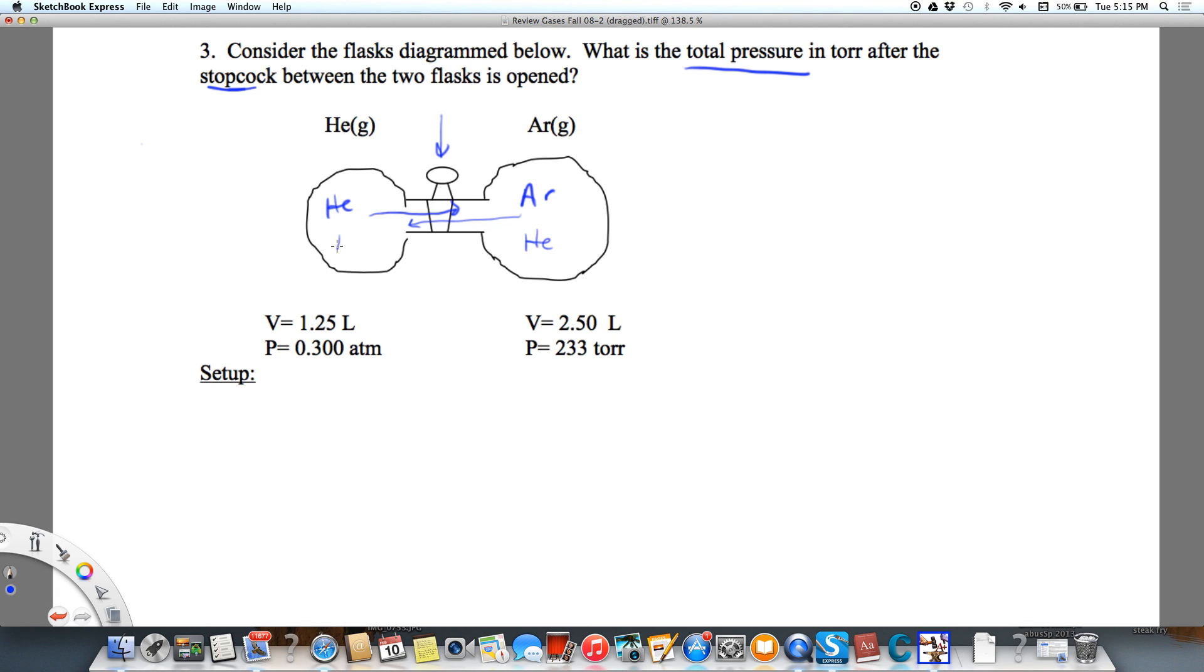We'll have helium over here and argon over here and we'll have mixing. One thing we want to remember is that the P-total, and this is going to be after mixing, is going to equal the pressure of helium plus the pressure of argon after mixing.